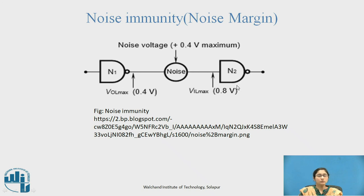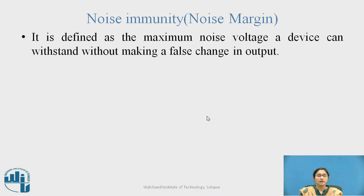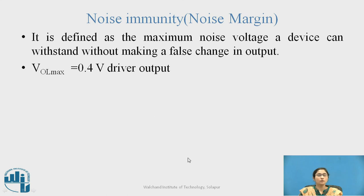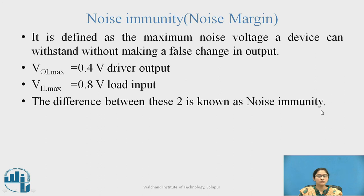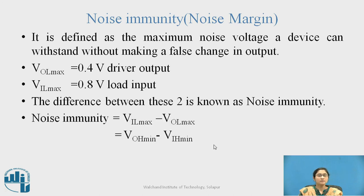Noise immunity. Two gates N1 and N2 are shown — N1 is the driver gate and N2 is the load gate. The driver output VOL max equals 0.4 V, and the load gate N2 has VIL max of 0.8 V, generating a noise voltage of 0.4 V maximum. Noise margin is defined as the maximum noise voltage a device can withstand without making a false change in output. Noise immunity is expressed as: VIL max − VOL max, and VOH min − VIH min.